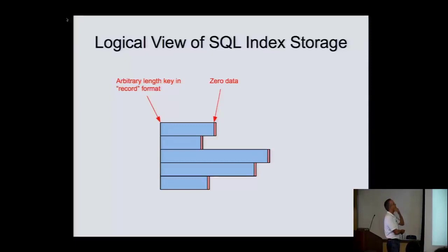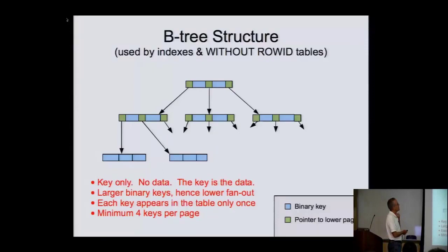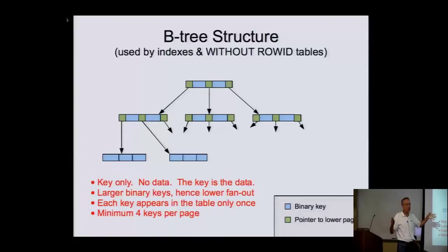Indexes are stored as regular B-trees. We treat an index as just the key — there's no data on an index, just binary key data. The B-tree doesn't know how to sort these because it's binary, so the next layer up hands it a comparison function. In a B-tree (as opposed to B-plus tree) the keys are not duplicated — only one instance of each key — which is important because the keys are much larger. This means reduced fan-out, so searching takes a little longer. We've got SQLite set up so there's always a minimum of four keys on every page.